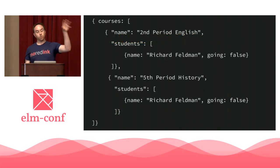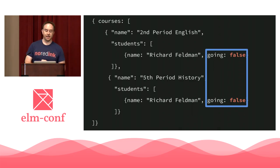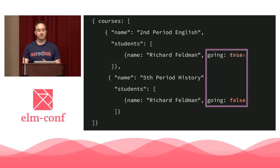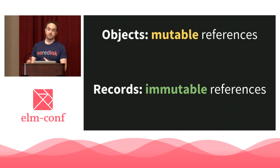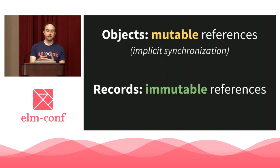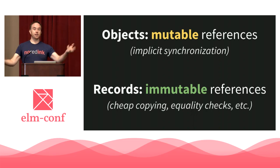To make this clearer, let's compare JavaScript objects to JSON. JSON is immutable data — it has to be, to serialize. In JSON, we'd have two separate entries for Richard Feldman under each course, both with going: false. Unlike mutable objects where both pointed to the same memory location, now we have two independent pieces of data that can get out of sync. Objects have implicit synchronization via mutable references; records and JSON do not.